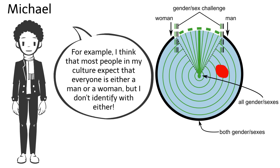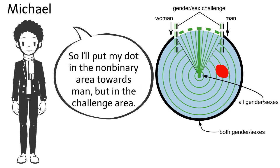For example, I think that most people in my culture expect that everyone is either a man or a woman, but I don't identify with either. So I'll put my dot in the non-binary area towards man, but in the challenge area.